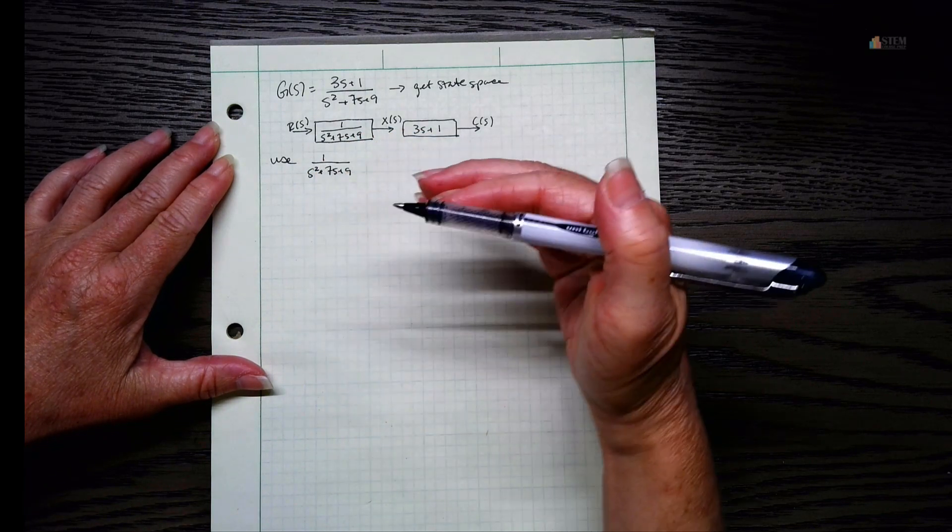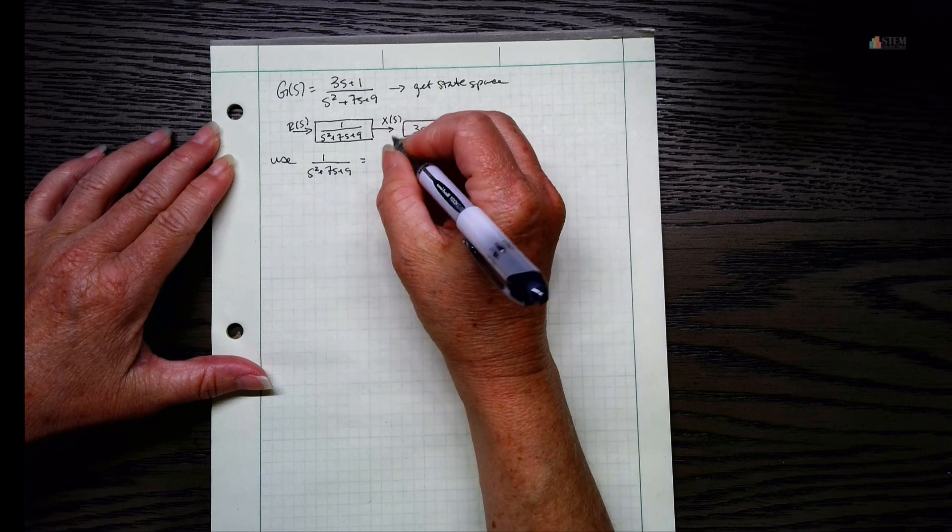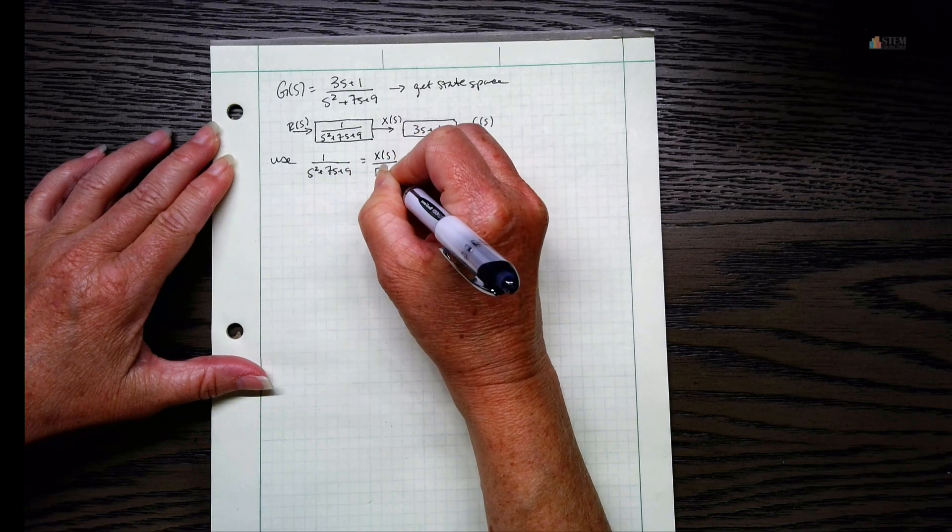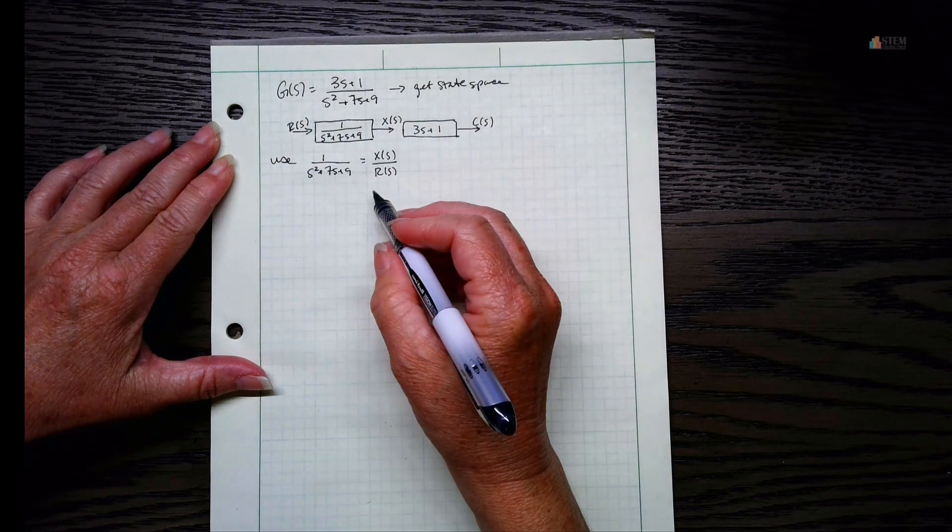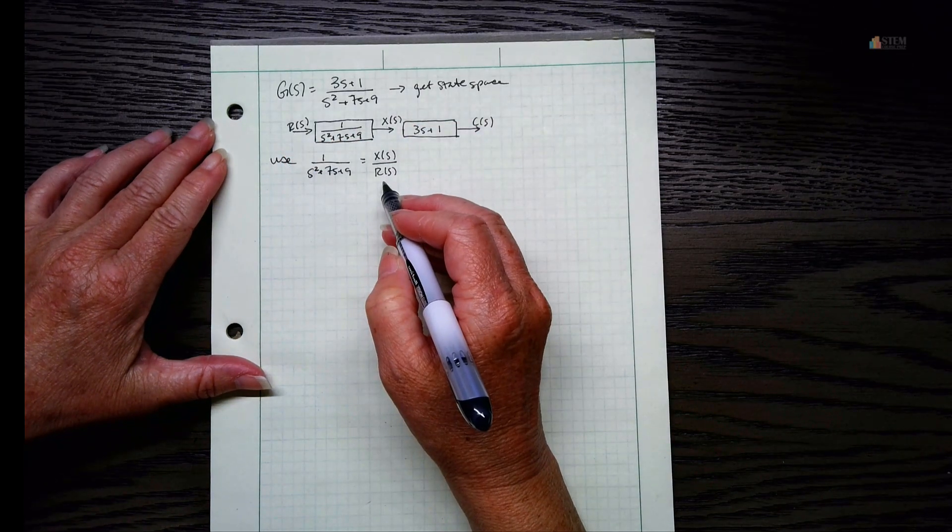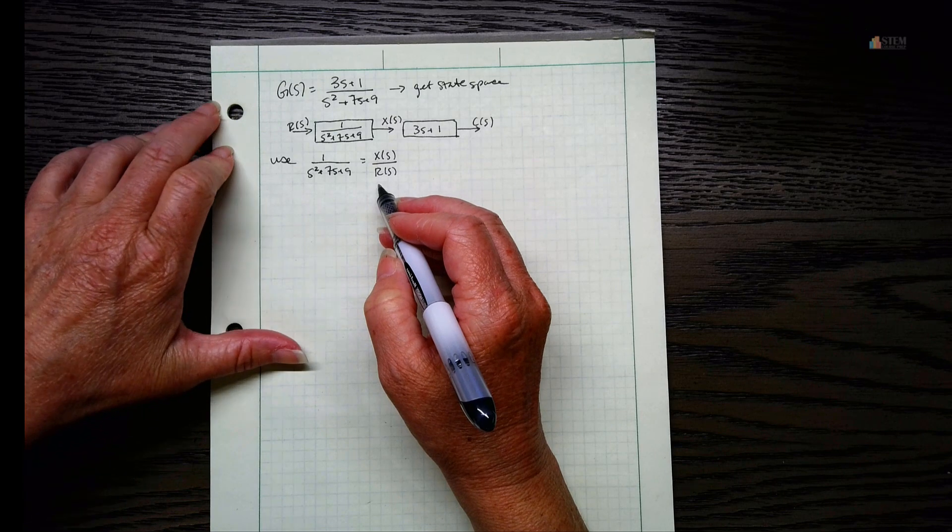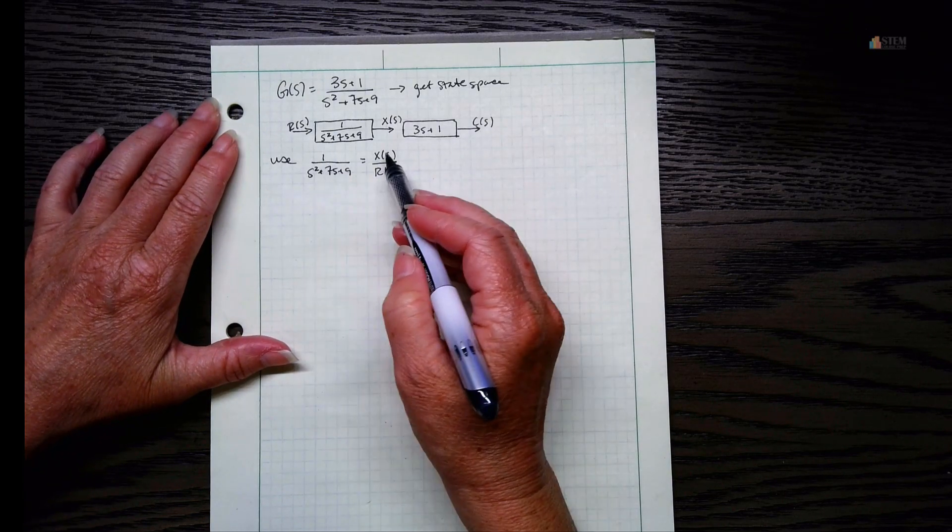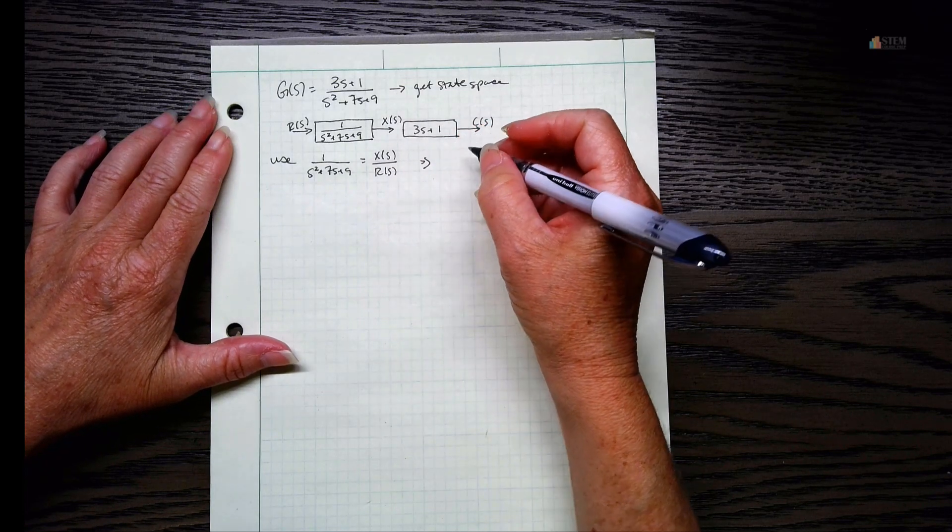That is like a transfer function - it's output over input. So that means if the output is X of S, we'll have that over the input, which is R of S right here. So now we've got this expression here. Now what we want to do is basically cross multiply.